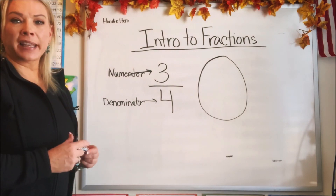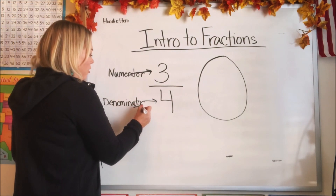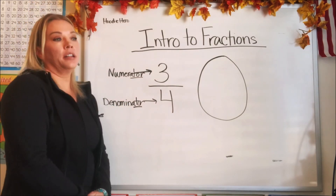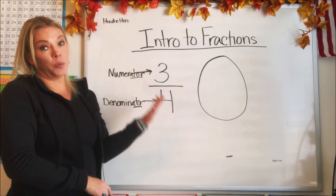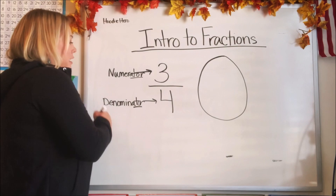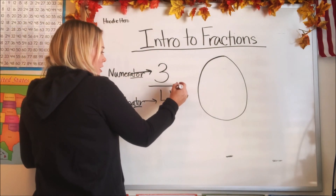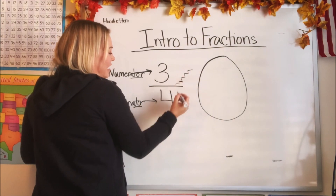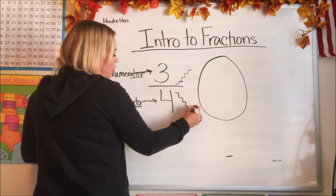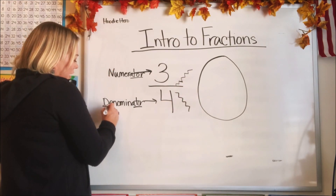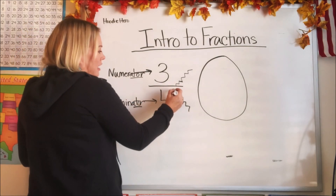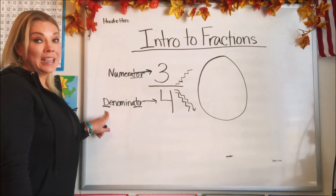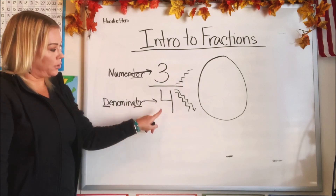They both end in '-ator,' like a gator — A-T-O-R. So the top is the numerator and the bottom is the denominator. I found a trick that helps me remember which word goes to which number. I like to think of this as a house — this is the upstairs, these are my stairs, and this is my downstairs. The denominator starts with a D, like downstairs. That's how I remember — the one that starts with D, the denominator, is the downstairs number, which is the bottom one.